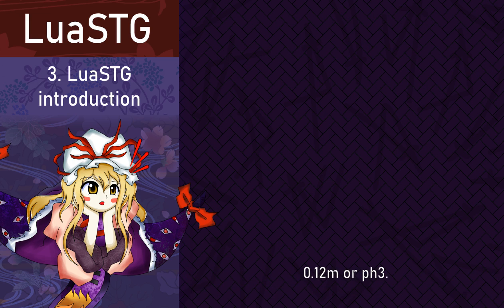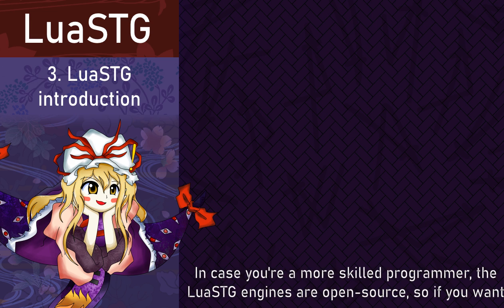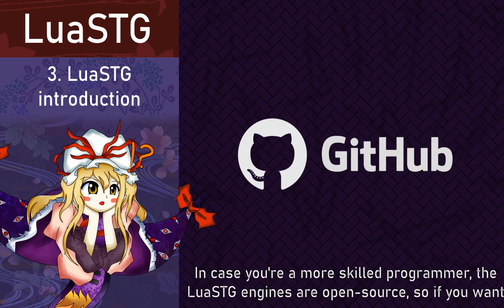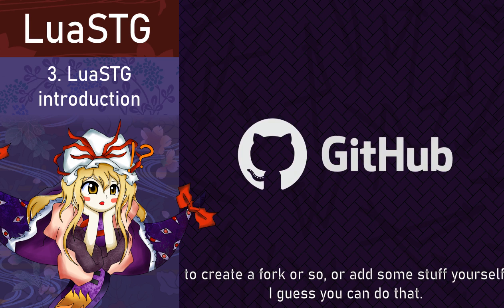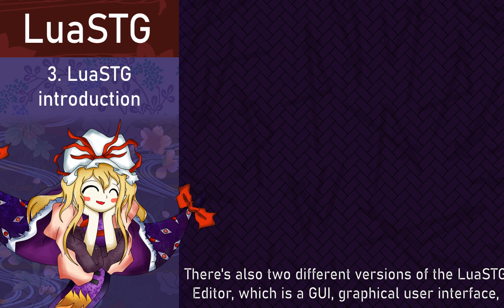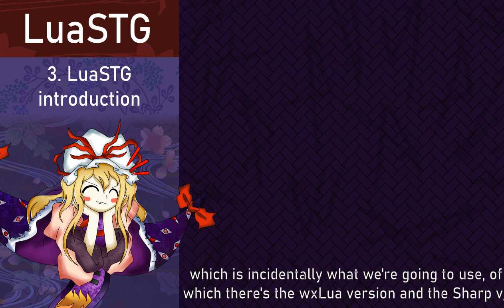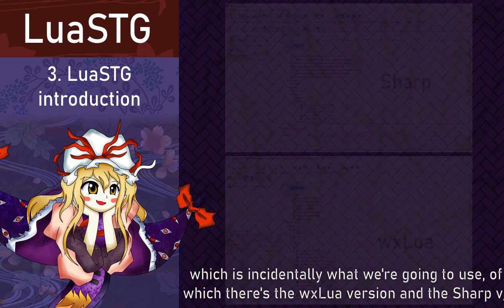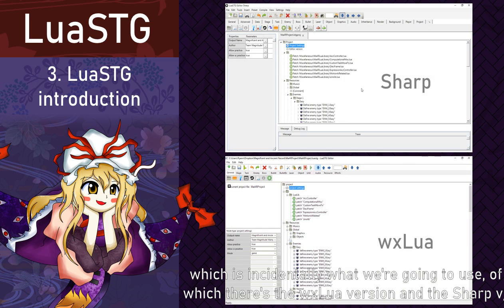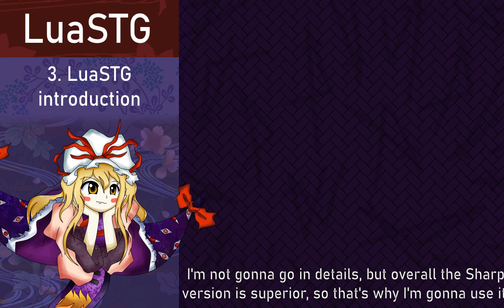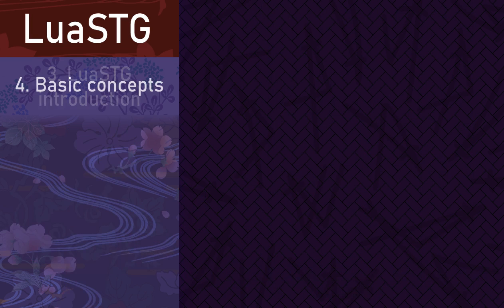In case you're a more skilled programmer, the LuSCG engines are open source, so if you want to create a fork or add some stuff for yourself, I guess you can do that. There are also two different versions of the LuSCG Editor, which is a GUI — a graphical user interface — which is incidentally what we're gonna use. There's the WXLua version and the Sharp version. The Sharp version is superior overall, so that's why I'm gonna use it.